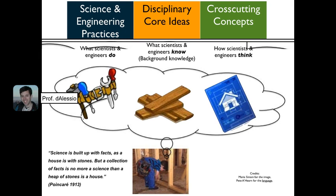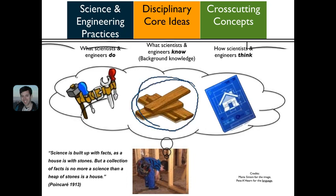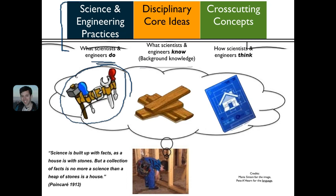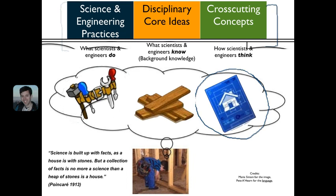Beyond just knowing what the letters stand for, we want you to understand these different dimensions of NGSS. Poincaré, a philosopher of science, said that science is built up with facts as a house is with stones, but a collection of facts is no more science than a heap of stones is a house. In NGSS, the disciplinary core ideas are the basic building blocks — what scientists and engineers know. The science and engineering practices are the tools — what scientists and engineers do. And the cross-cutting concepts are like blueprints — the common threads that make scientists different in how they see the world.